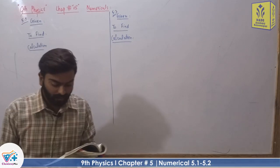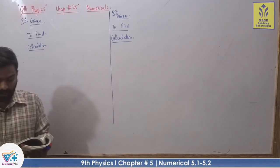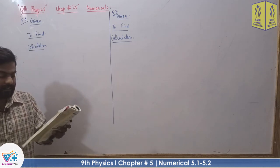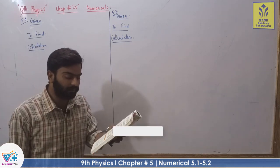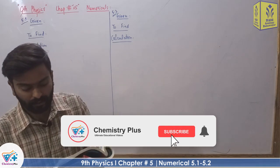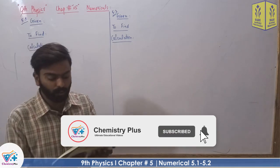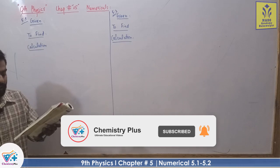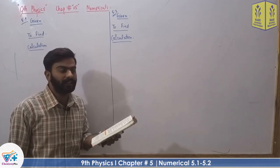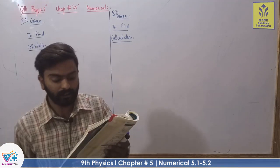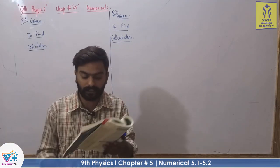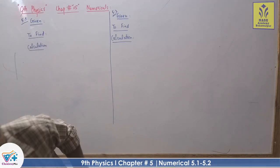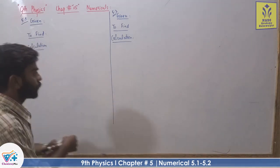Bismillahirrahmanirrahim, Assalamu Alaikum. Chapter 5, Numerical 5.1. Find the gravitational force of attraction between two spheres, each of mass 1000 kg. The distance between the centers of the spheres is 0.5 meter.